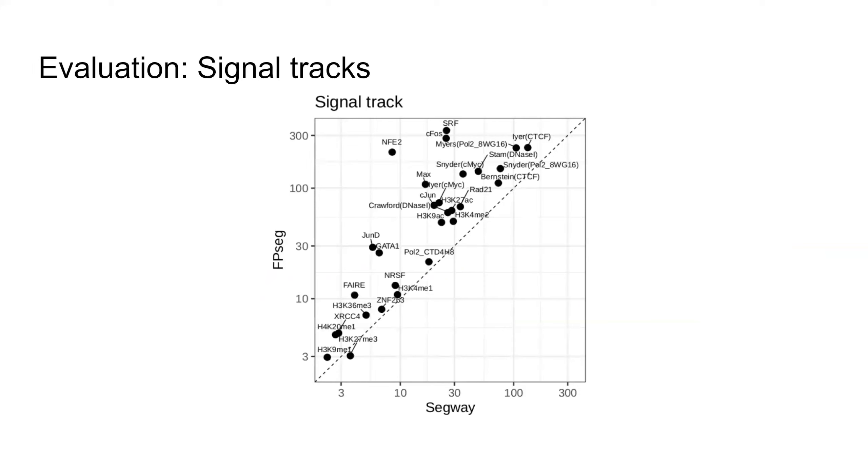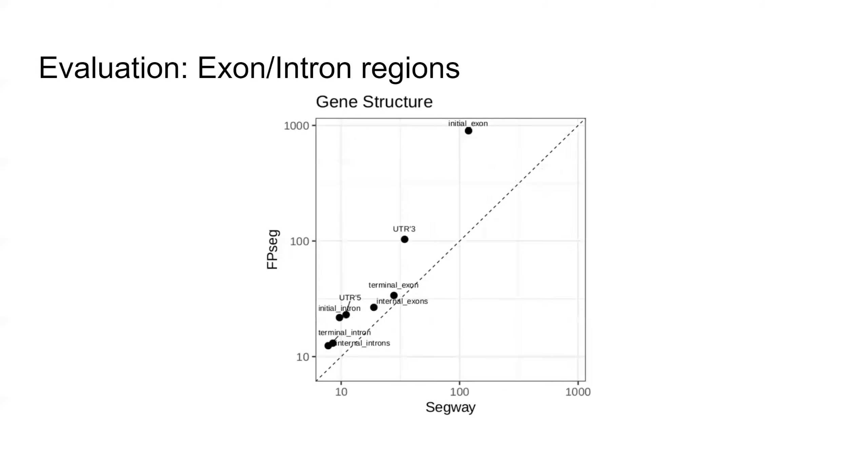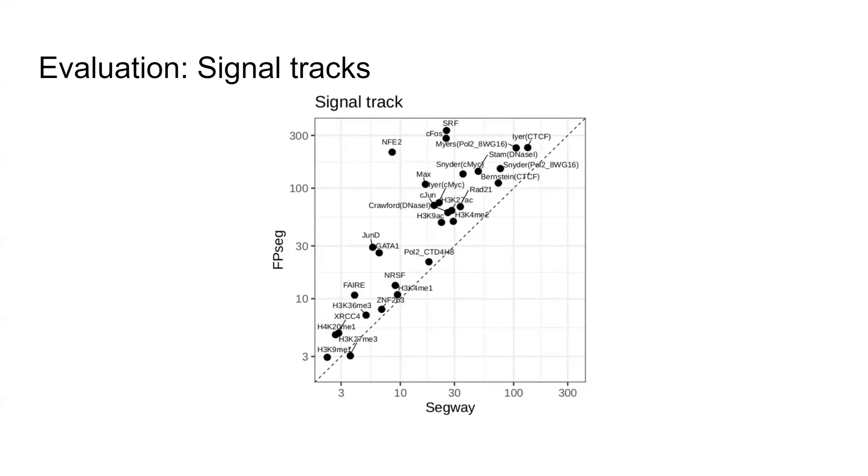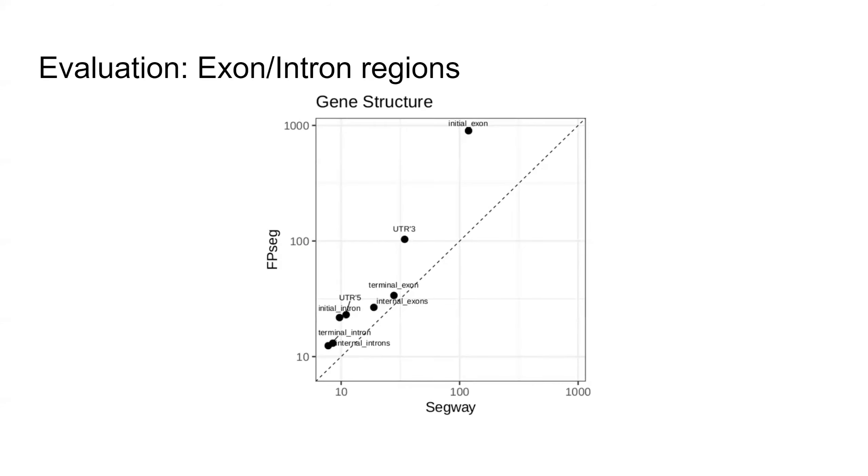We evaluated FPseg with maximum fold change in three different categories and compared it with SEGWAY, another genome segmentation algorithm that is very popular. For the signals that we use to segment the genome, FPseg did better for all tracks except for H3K27Me3. The H3K27Me3 has a low maximum fold change for both algorithms.